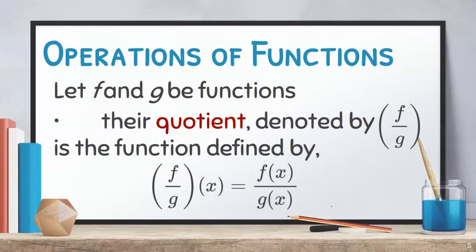Let us now go to dividing functions. Let f and g be functions. Their quotient, denoted by f over g, is the function defined by f over g of x equals f of x over g of x. Meaning, the quotient of the functions f over g of x can be solved by dividing f of x over g of x.